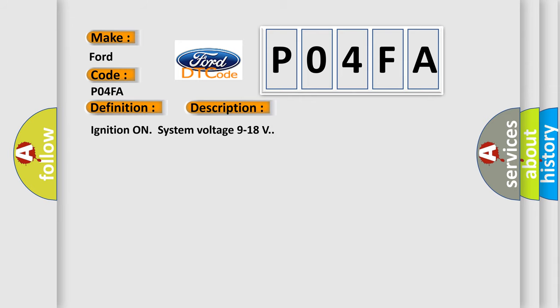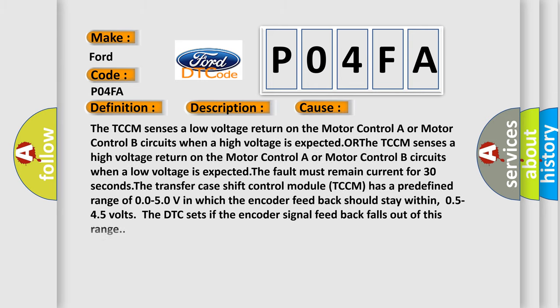Ignition on system voltage 9 to 18 volts. This diagnostic error occurs most often in these cases: The TCCM senses a low voltage return on the motor control A or motor control B circuits when a high voltage is expected. The fault must remain current for 30 seconds.